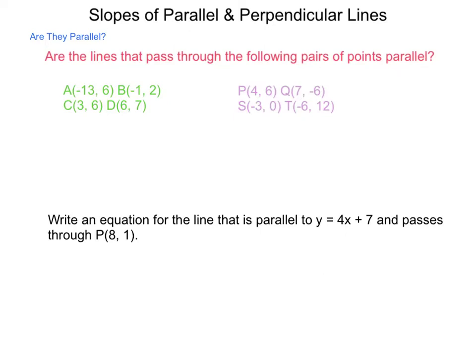What are their slopes? Let's begin by finding the slope of AB. That's going to be the rise. From 6 to 2, what's the change? That is a change of negative 4. And the run, from negative 13 to negative 1, that is a movement to the right of 12. Negative 4 divided by 12 is negative 1/3.